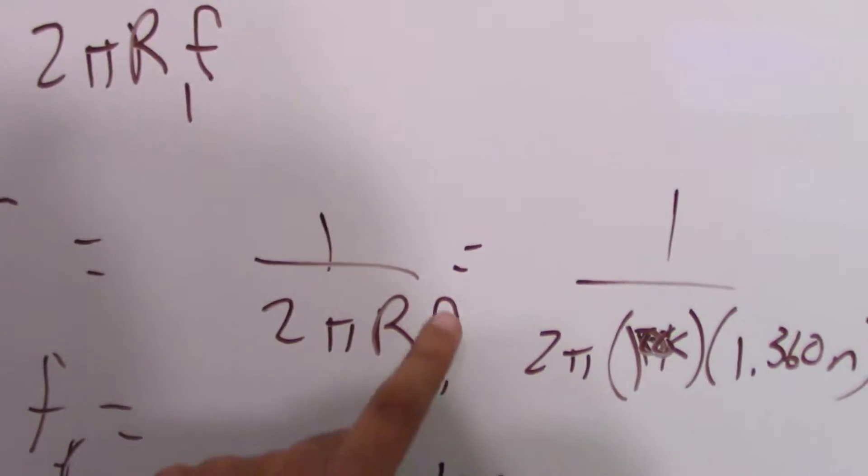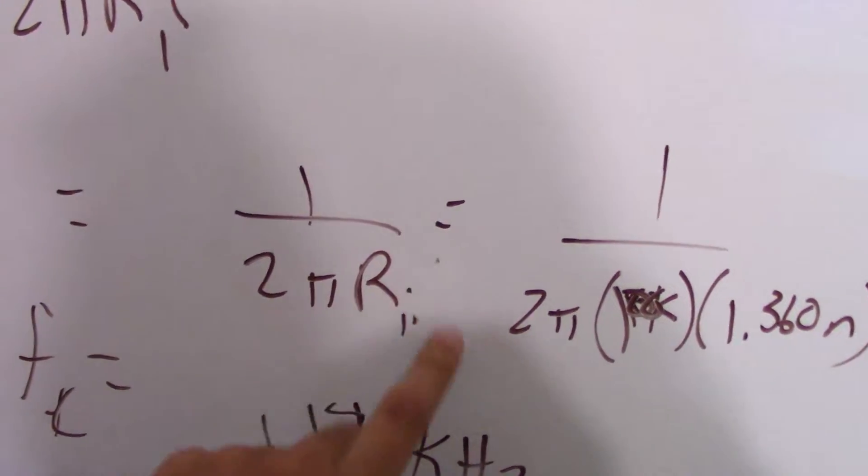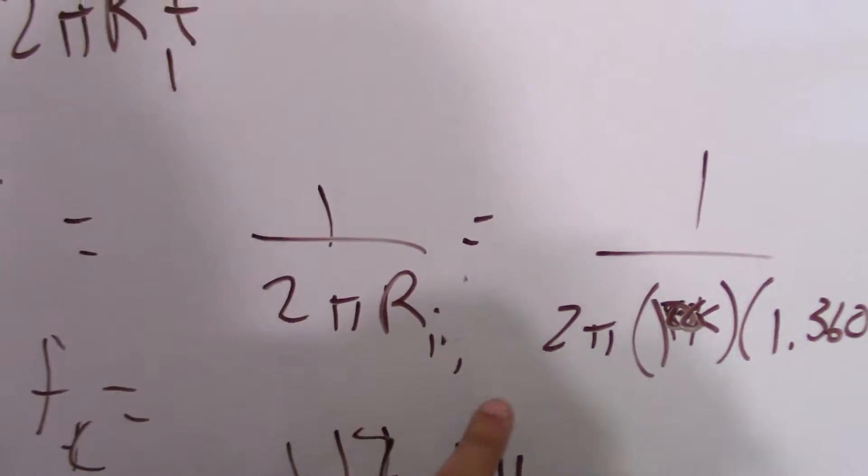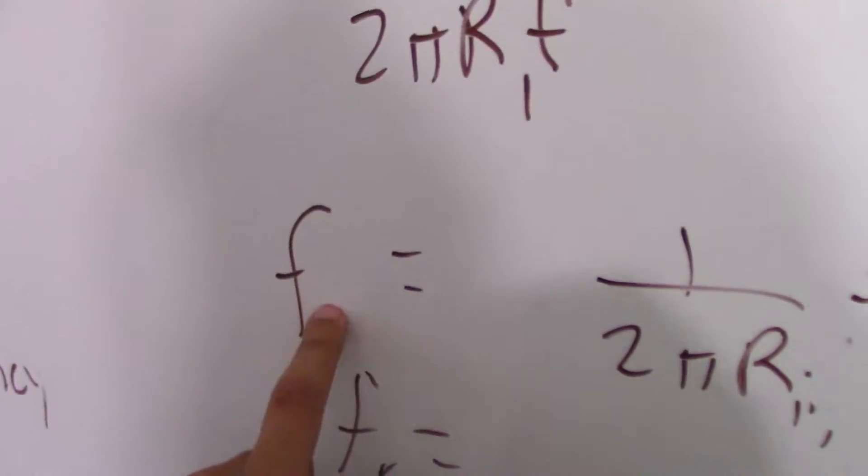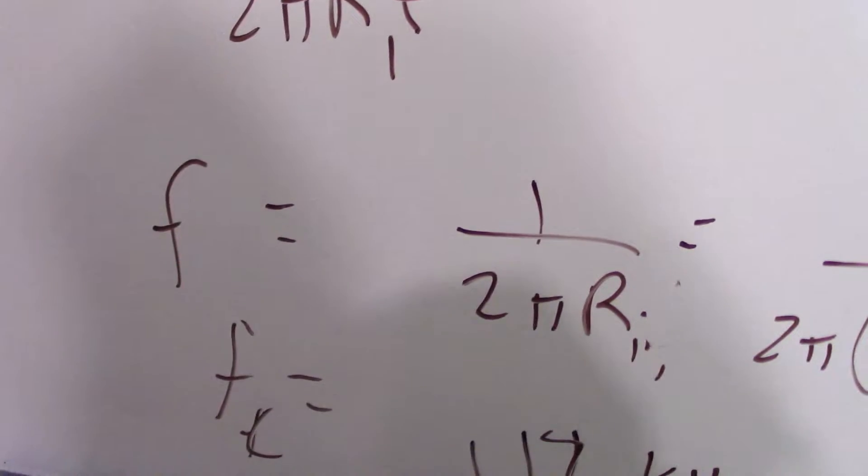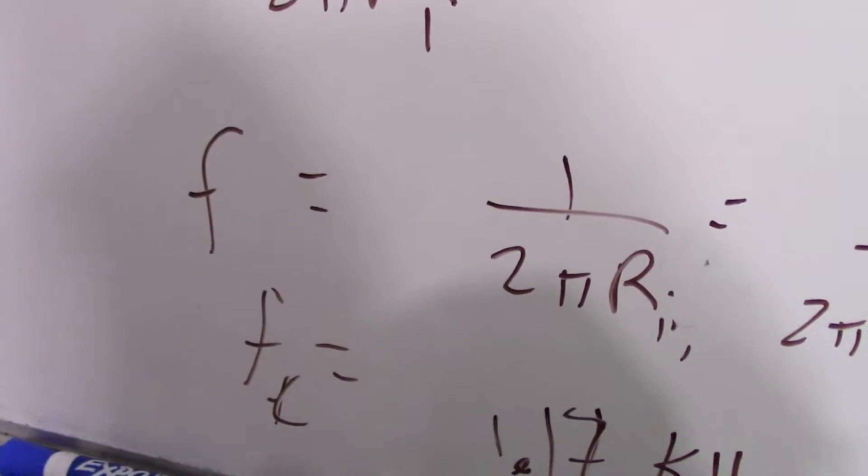So what you do, you could change this value. So this is actually a C. So it's one over two pi R times C, and that'll give you the cutoff frequency, or the frequency at which the gain of the input when doing the integration would equal one.